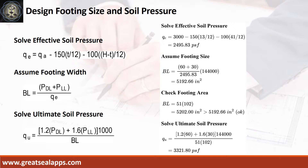Given allowable soil pressure equals 3,000 PSF, assumed footing depth equals 13 inches, and depth from natural grade line equals 4 feet 6 inches, the effective soil pressure is 2,495.83 PSF. Given actual dead load of 60 kips and actual live load of 30 kips, the assumed footing width is 51 inches and footing length is 102 inches. The ultimate soil pressure is 3,321.8 PSF.